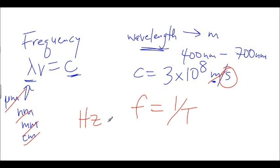Hertz is equivalent to cycles per second — how many cycles we go through every single second in time. In other words, frequency is how many wavelengths will pass a fixed point at a given time.